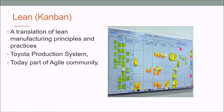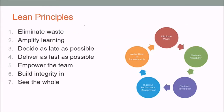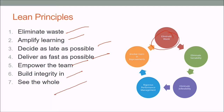Lean Kanban is a translation of lean manufacturing principles and practices — for example, the Toyota Production System — now part of the agile community. Lean principles include: eliminate waste, amplify learning, decide as late as possible, deliver as fast as possible, empower the team, and build integrity. We eliminate waste, variability, and inflexibility, and involve the user.